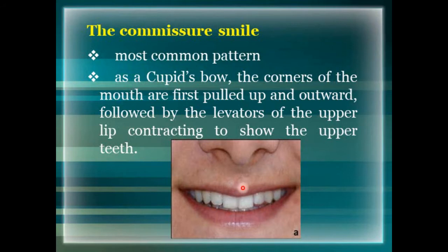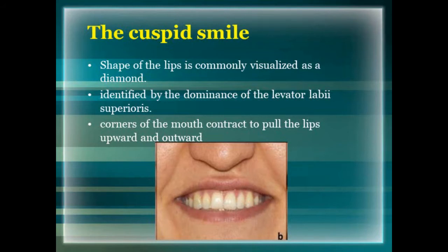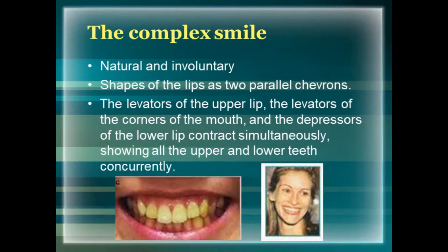In the cuspid smile, the shape of the lip is almost similar to that of a diamond. It is identified by dominance of the levator labii superioris. Here, the levator labii superioris contracts first, exposing the cuspid teeth, followed by the corners of the mouth contracting to pull the lip upward and outward — the reverse of the commissure smile. The third type is the complex smile, which is natural and involuntary, rare at around 2% of the population.